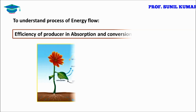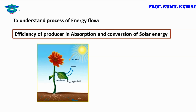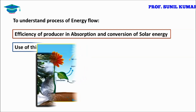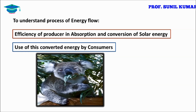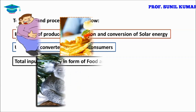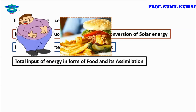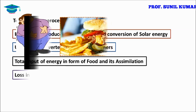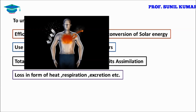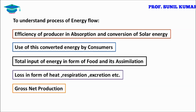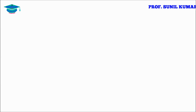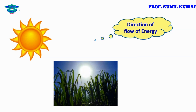The efficiency of the producer is to absorb and convert solar energy into chemical energy, which is then used by consumers. The total input of energy is used in the form of food and assimilation. Some energy is lost in the form of heat, respiration, excretion, etc. The remaining is net production — how much energy is finally saved.